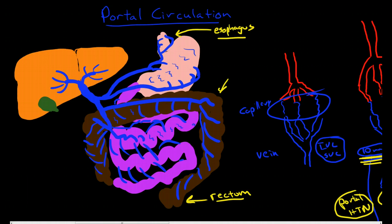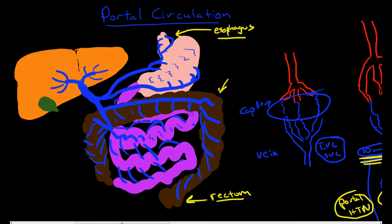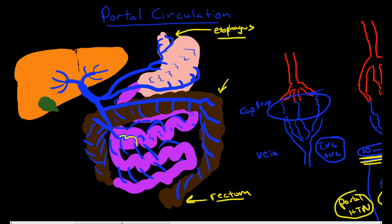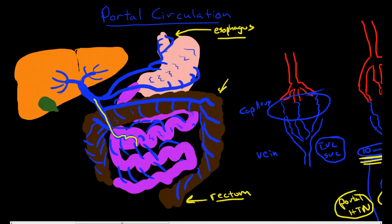And then it opens up into veins again. In these veins, say we're draining from the small bowel, we join the superior mesenteric vein. The superior mesenteric vein joins up with the splenic vein and the inferior mesenteric vein and creates the portal vein. And then it flows into the liver.